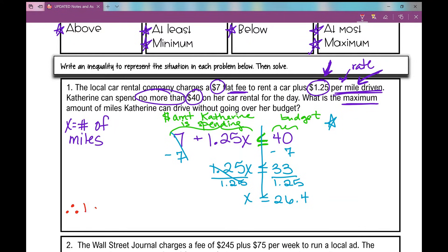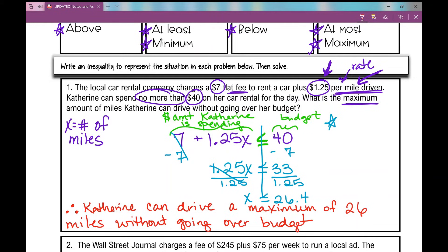Let's write our therefore statement because we're writing a word problem. And we can't just leave our answer like this. Our answer means something. So therefore, Catherine can drive a maximum of how many miles? Not 26.4 because your car rental company isn't going to charge you for 4 tenths of a mile. So a maximum of 26 miles without going over budget.